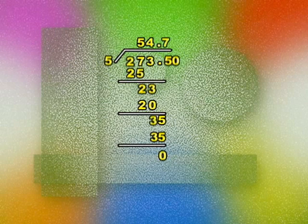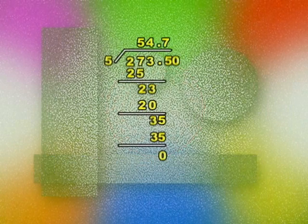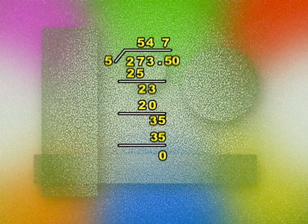So we get a quotient of 54.7. That's 54 pesos and 70 centavos for each plate. Easy, isn't it? It's exactly like dividing whole numbers. You just need to put the decimal point right above the decimal point in the dividend. What could be easier than that?